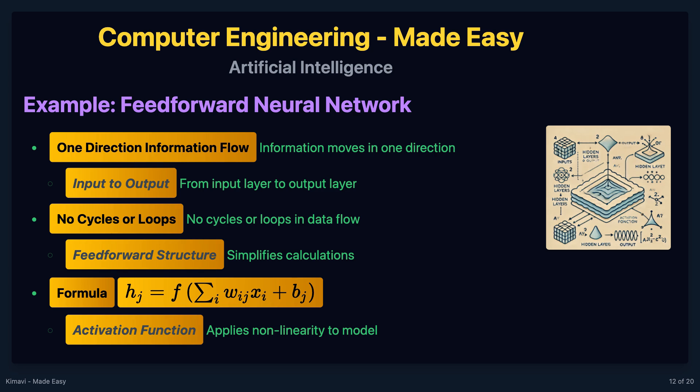Here is what the formula means. H sub j is the output of the j-th neuron in the hidden layer. The sum from i means we are adding up values for all the inputs. W sub ij is the weight between the i-th input and the j-th neuron. X sub i is the value of the i-th input. B sub j is the bias term for the j-th neuron, which adjusts the final output. F is the activation function, which adds nonlinearity to the output. A common function is called sigmoid, written as f(x) equals 1 divided by 1 plus e raised to the power of negative x. This formula explains how inputs are combined, weighted, and processed to produce an output in the neural network.